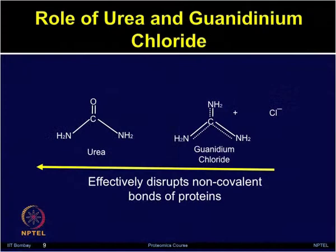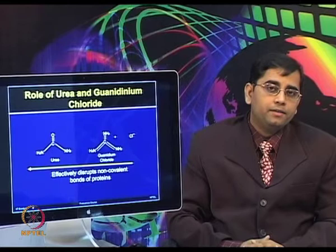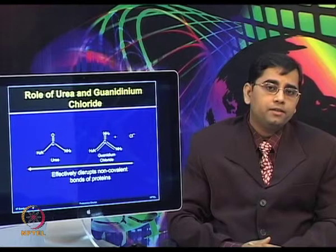This protein catalyses the hydrolysis of RNA. What is the role of urea and guanidinium chloride? Urea is an organic compound which has two amino groups joined by a carbonyl group, and is used at a concentration of around 6 molar for denaturing proteins by breaking non-covalent interactions. Both urea and guanidinium chloride can effectively disrupt the protein's non-covalent interactions.